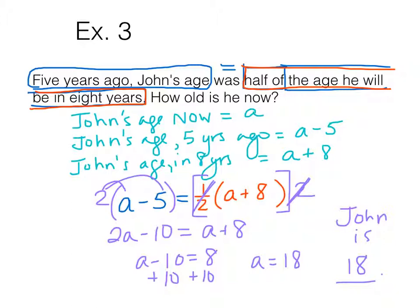John is 18 years old. Alright, so that's an age word problem. That's the expectation here. List out the unknowns. Define them. Write the equation. Let's try another one.